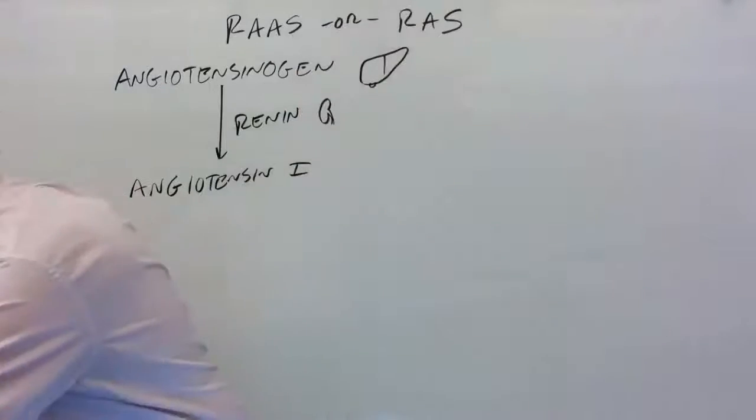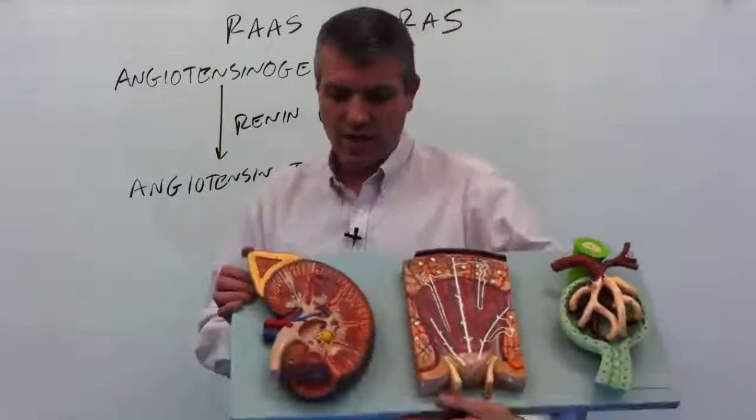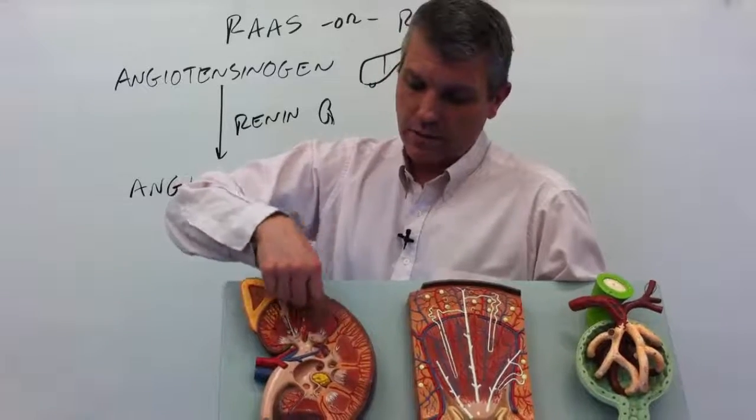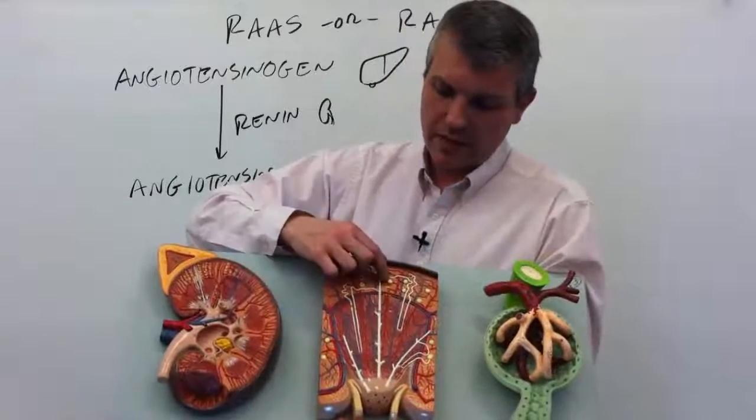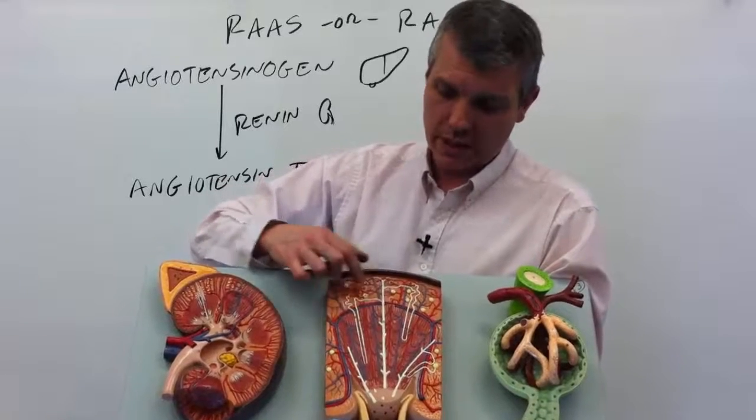In case you want to get into the hardcore details, this is a kidney model. This is the large kidney, and over here we have a blow-up of one of these little pyramids. Then if you take one of these little yellow dots, they're called renal corpuscles.